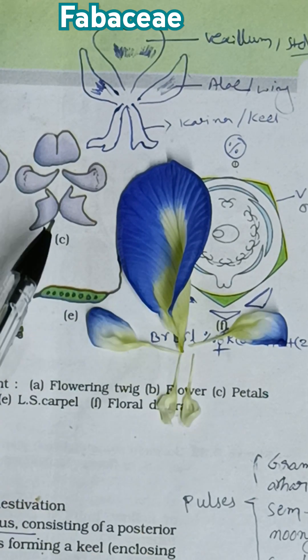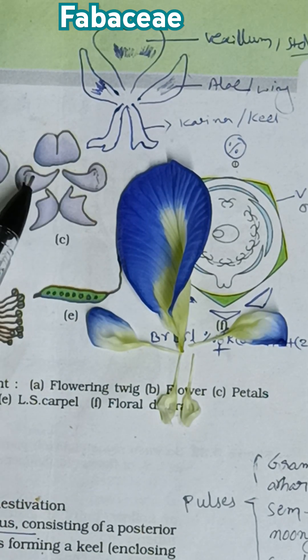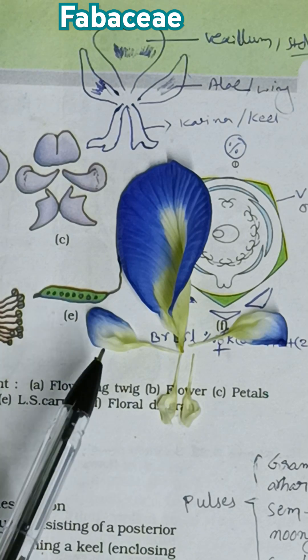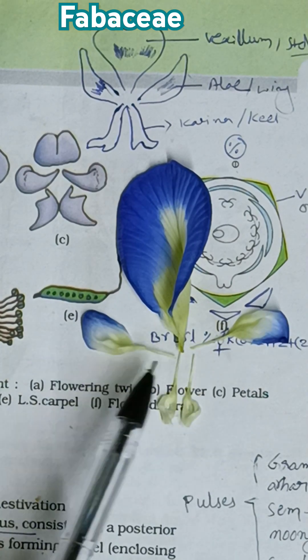On either side of this standard petal, you can see these two are wing petals, otherwise called as Alae. So this and this — these two are the wing petals.